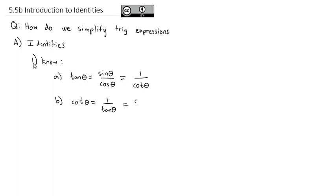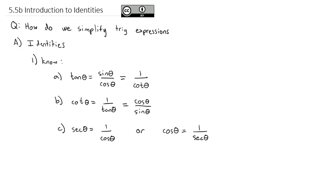We could rewrite the reciprocal of tangent as cosine over sine. We know the secant of theta is equal to the reciprocal of cosine, or cosine is the reciprocal of secant. And finally, the cosecant of theta is the reciprocal of the sine, or sine is the reciprocal of the cosecant.